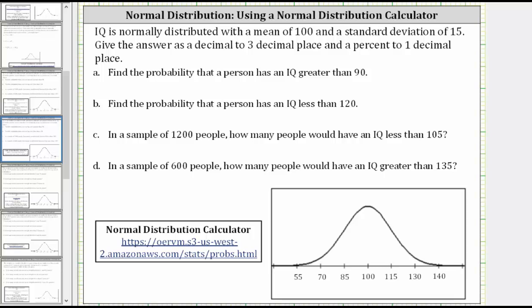IQ is normally distributed with a mean of 100 and a standard deviation of 15. For part A, we're asked to find the probability that a person has an IQ greater than 90, and we're asked to give the answer as a decimal to three decimal places as well as a percent to one decimal place.